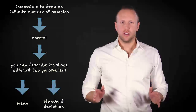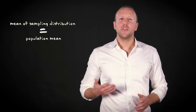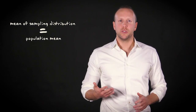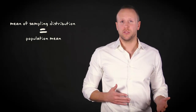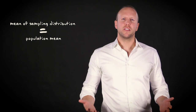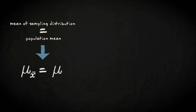The mean of the sampling distribution is equal to the mean of the population distribution. We can display that as follows: mu x-bar is equal to mu. Mu stands for the population mean, and mu x-bar stands for the mean of the sampling distribution of the sample mean.